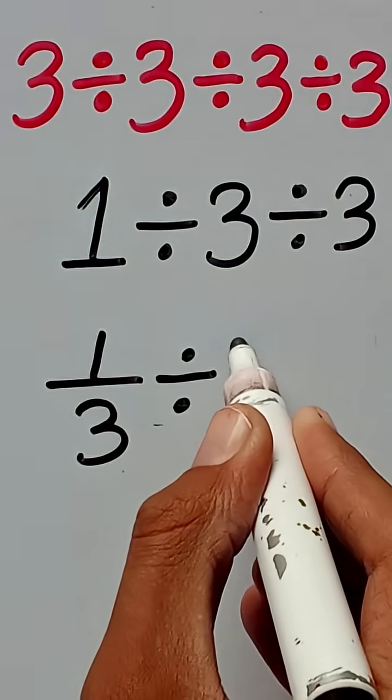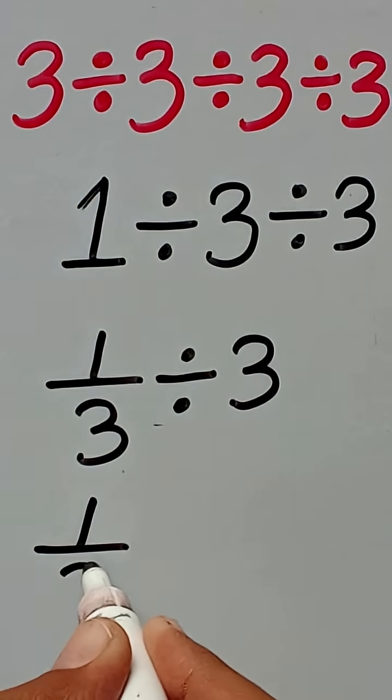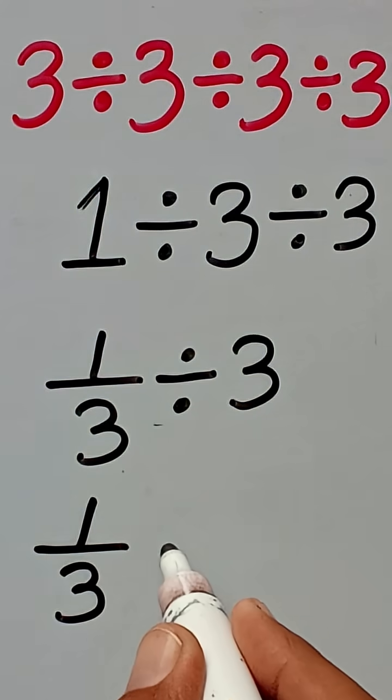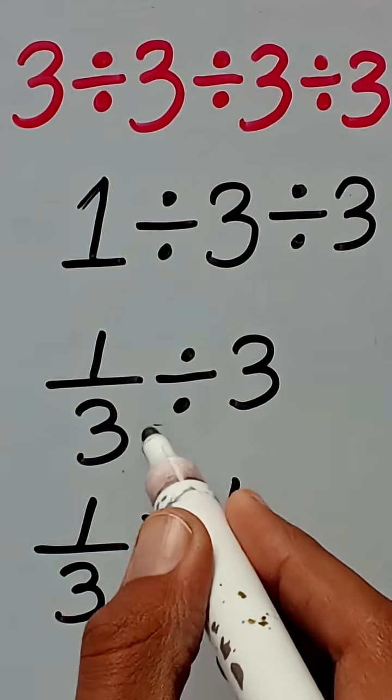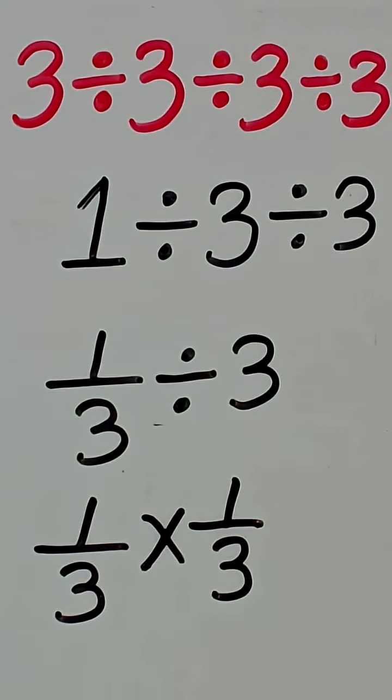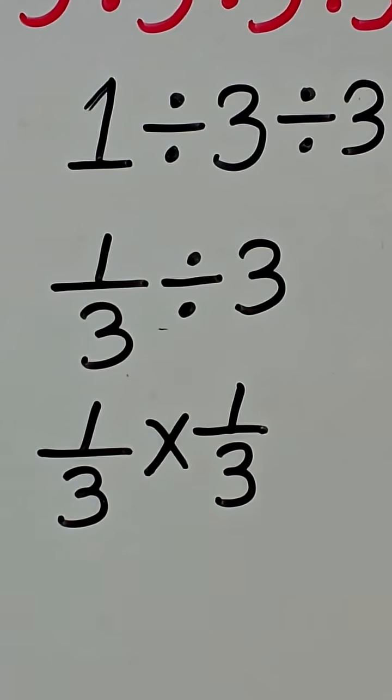divided by 3. To solve this part, we follow the rule of KCF, which says that whenever in an expression division is changed to multiplication, the denominator is changed to the reciprocal.